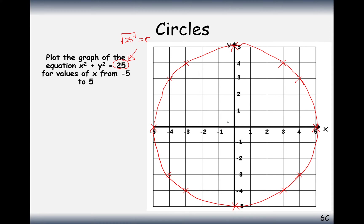You can see how it links into Pythagoras' theorem: 3 squared along the base, add 4 squared along the height, equals our radius squared. So it links heavily with Pythagoras' theorem on this circle.